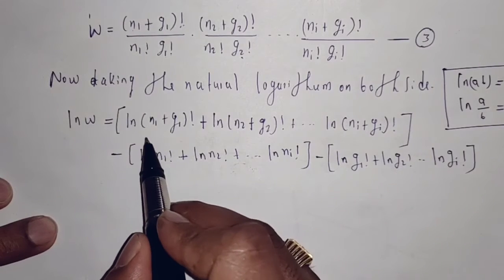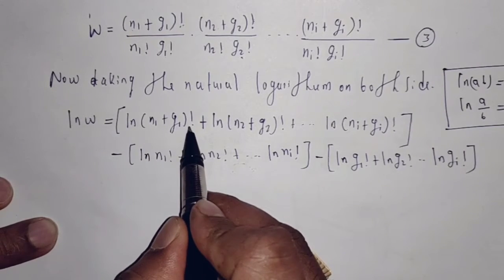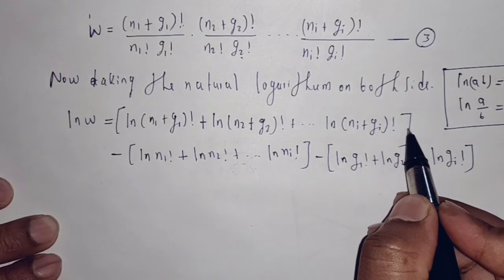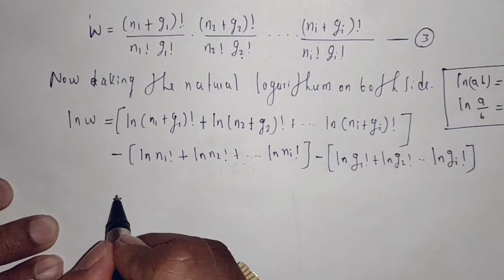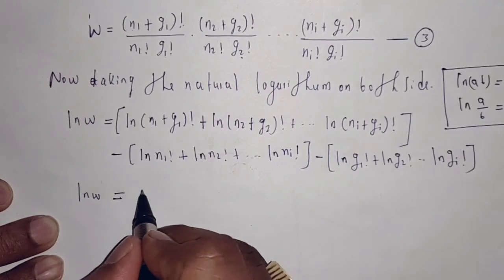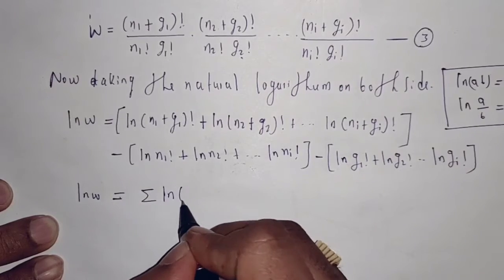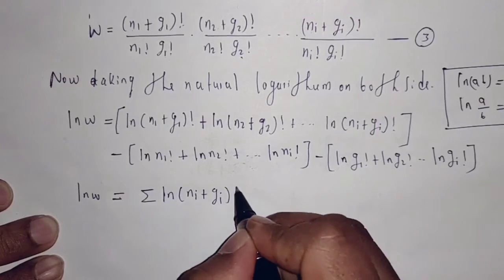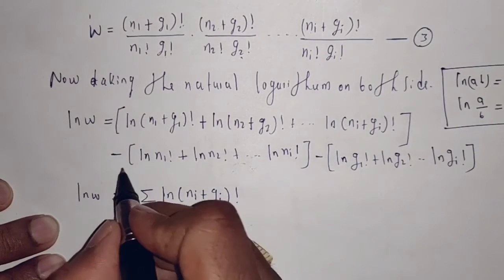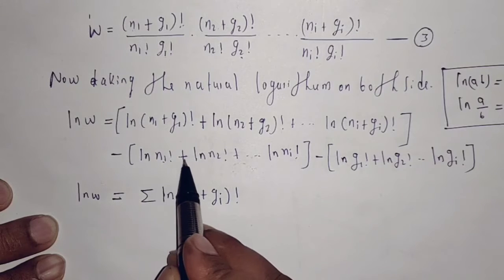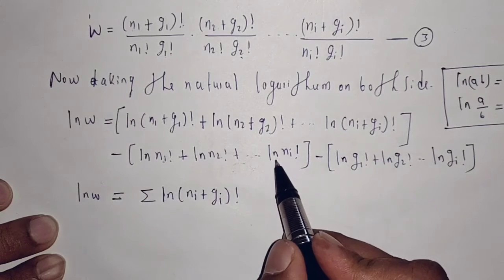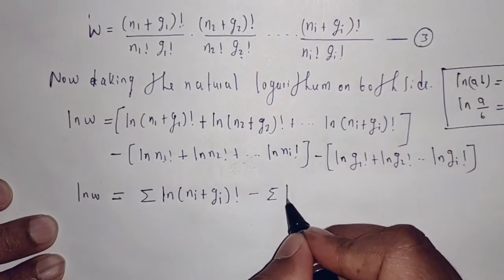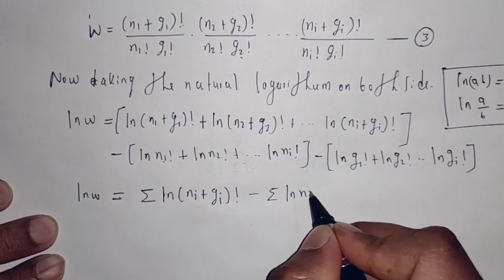Now I am going to write ln(W) as a summation. We can write it as: ln(W) = summation of ln(ni + gi)! minus summation of ln(ni)! minus summation of ln(gi)!.